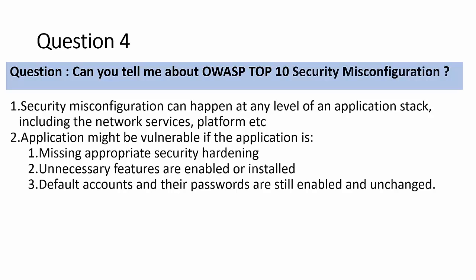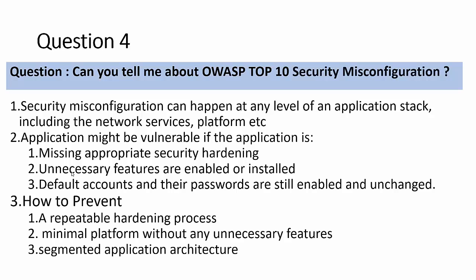An application may be vulnerable if it's missing appropriate security hardening, unnecessary features are enabled, or default accounts and passwords are still enabled and unchanged. To prevent: repeat the hardening process after development, do proper assessment for any gaps, run changes through a change management process, test the application in a separate environment before rolling out to production, and reduce the attack surface by running with minimum platform features — more functions means more invitation to attackers.